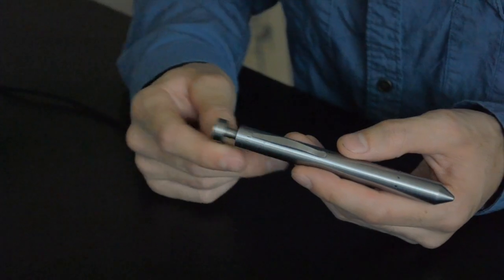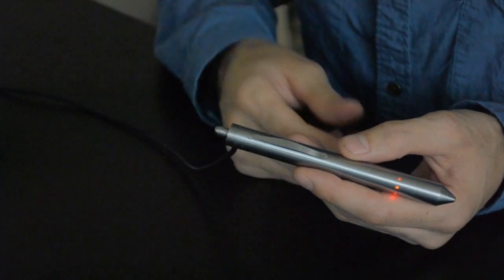We knew that charging the Grasshopper couldn't interfere with the way the device worked. That's why we developed this snap-on magnetic charging ring. It slips over the button, and the LEDs will start flashing.